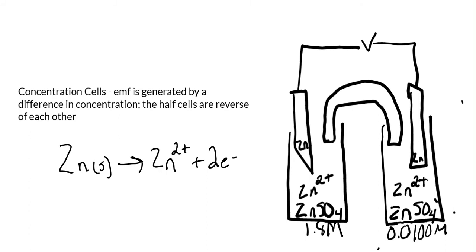And then in the other cell, I don't know which cell it is yet because we haven't gone through that, but in the other one I'm going to just have the reverse. I'm going to have that zinc 2+ gaining those two electrons to form the zinc solid. So now we've got to figure out which one is which.